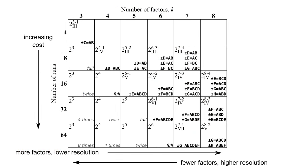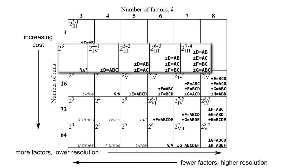That's what this trade-off table shows us. It tells us that if we can run eight experiments, then we could actually investigate three factors in a full factorial, four factors in a half fraction, five factors in a quarter fraction, and so on.